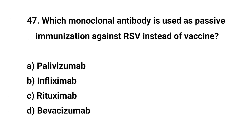Question number 47. Which monoclonal antibody is used as passive immunization against RSV instead of a vaccine? The right answer is A: Nirsevimab.